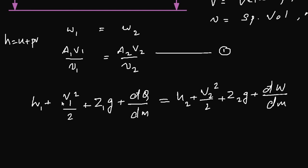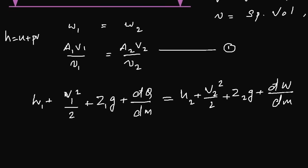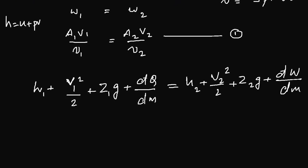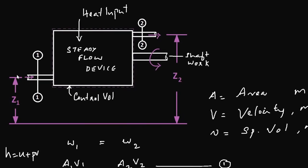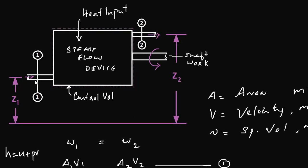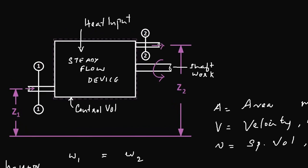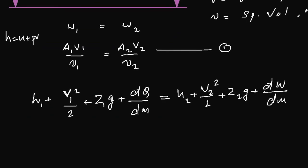Here, h is enthalpy — equal to internal energy plus the product of pressure and volume. V (capital) is velocity. z is the distance from the datum line to the entrance or exit, notated as z1 and z2 respectively. g is the gravitational constant. q is heat input or output, m is mass, so dq/dm is heat per unit mass. dw is work, so dw/dm is work per unit mass.